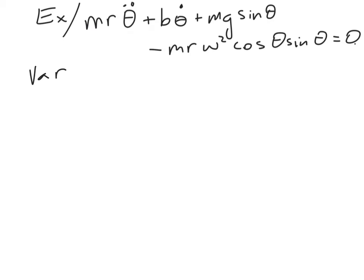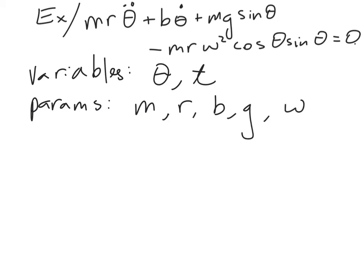And so the first thing we want to do is identify the variables, and these are theta and t, and then the parameters. These are m, r, b, g, and omega.